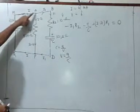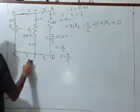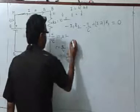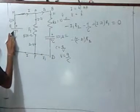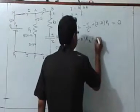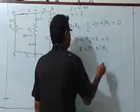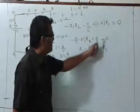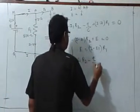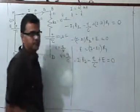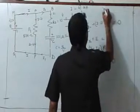Now let us look at the second loop, M, A, P, Q, M, going in the clockwise sense. From A to P, travelling in the direction of current, the voltage drop is minus (I minus I1) into R1. Then going from negative to positive terminal of the battery, the voltage is increasing, so plus E equals zero. That gives me E equals (I minus I1) into R1. If I substitute this into the first loop equation, I get: minus I1 R2 minus Q upon C plus E equals zero. This equation E equals (I minus I1) R1 is important and we will need it later.